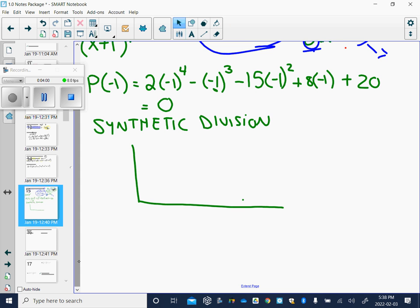We take our polynomial, we put only the coefficients. 2, minus 1, minus 15, 8, and 20. We look at our factor, and we put our 0. We put minus 1. Okay.